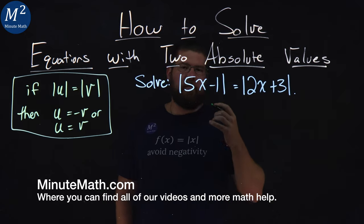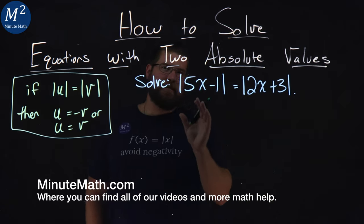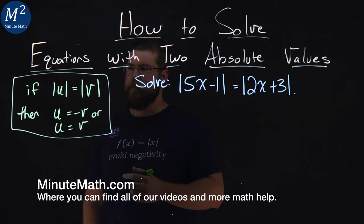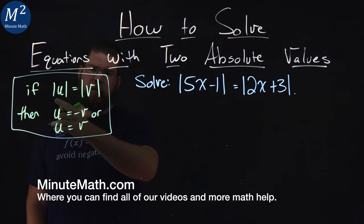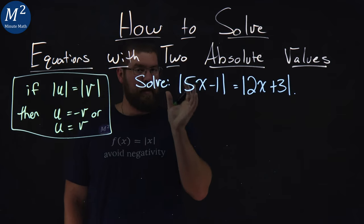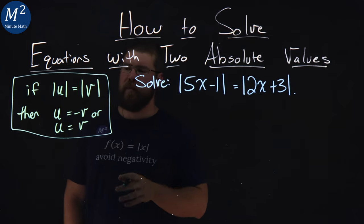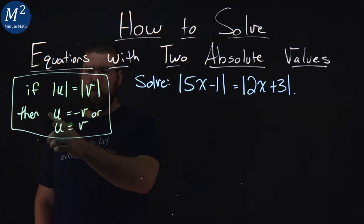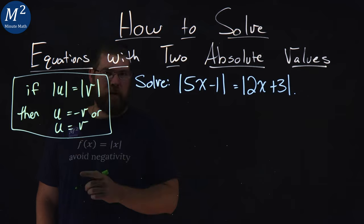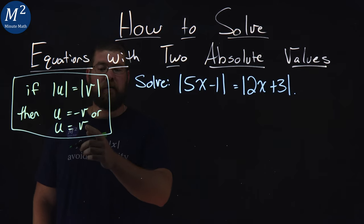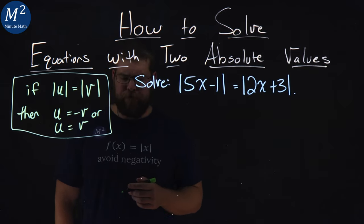Equations with two absolute values has a little rule we have to follow. If the absolute value of u is equal to the absolute value of v, then u is equal to negative v, or u is equal to positive v.